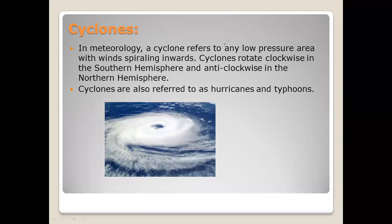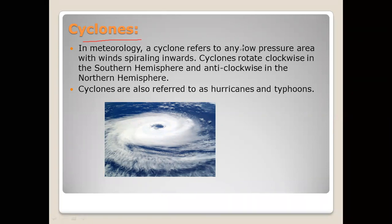Cyclones are basically winds having low atmospheric pressure with movement in a clockwise or anti-clockwise direction. These winds rotate mostly clockwise in the southern hemisphere and anti-clockwise in the northern hemisphere.